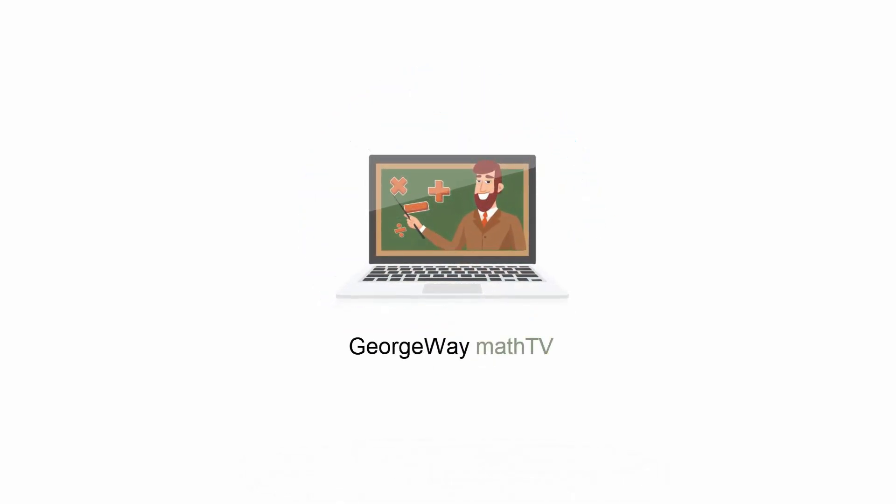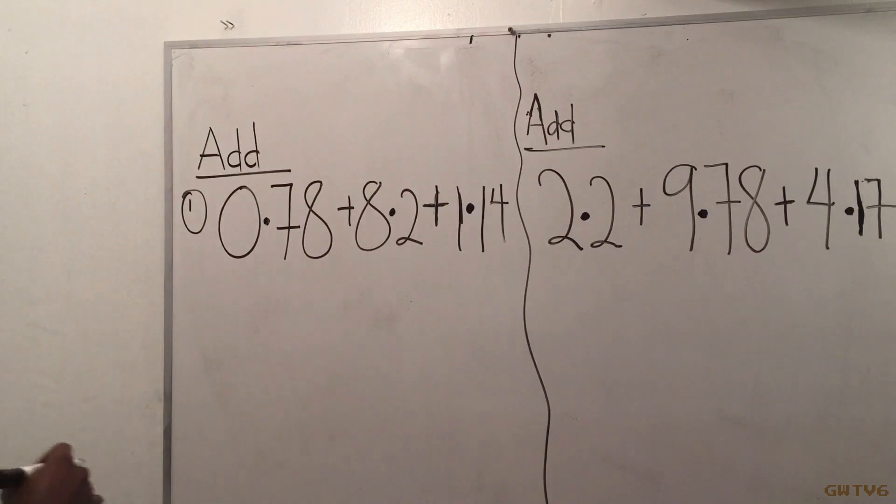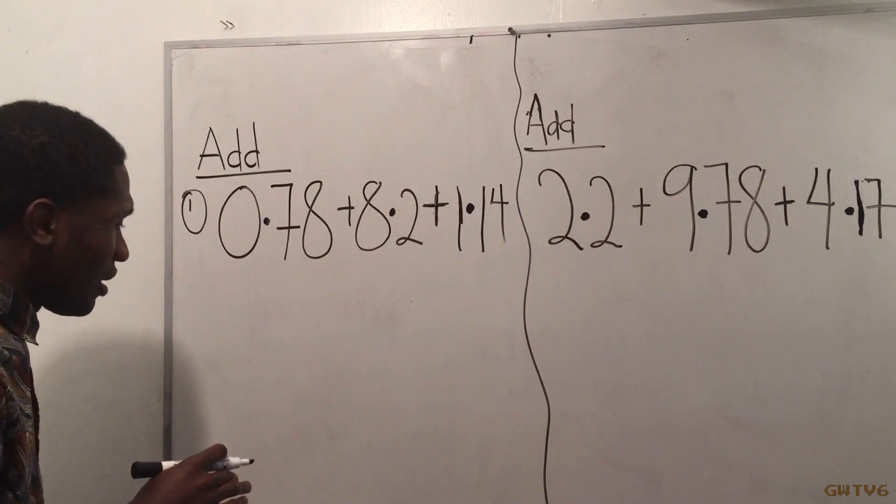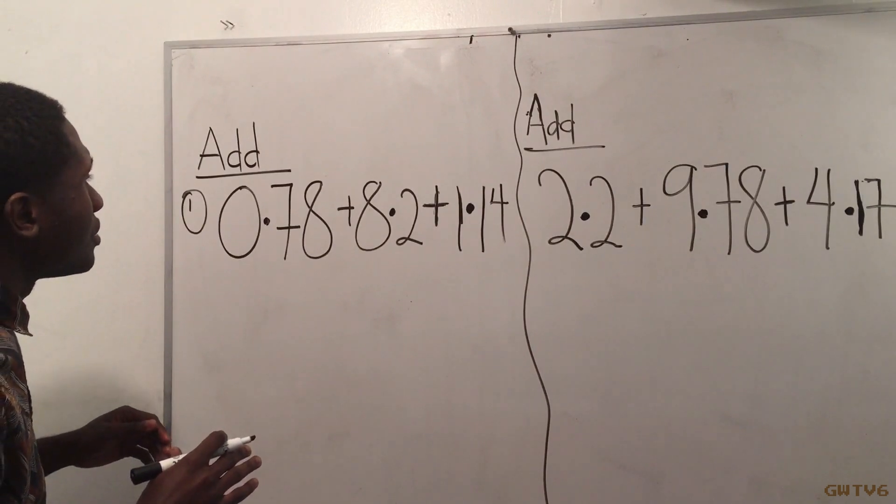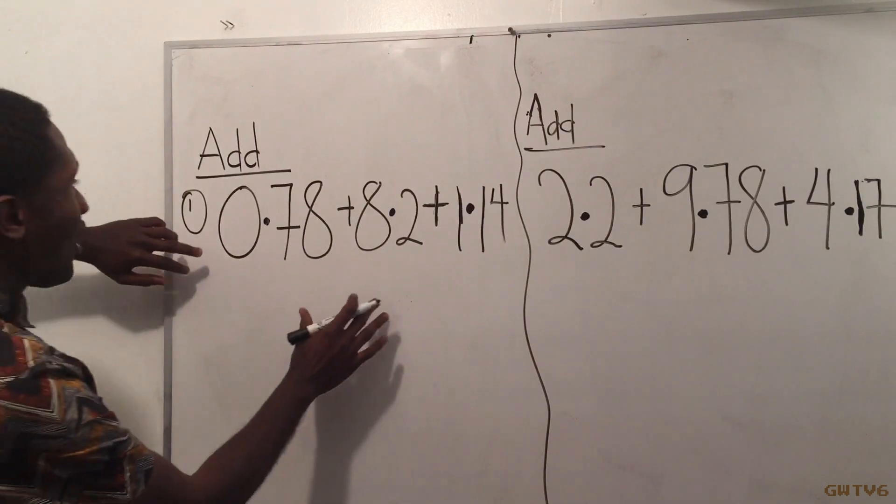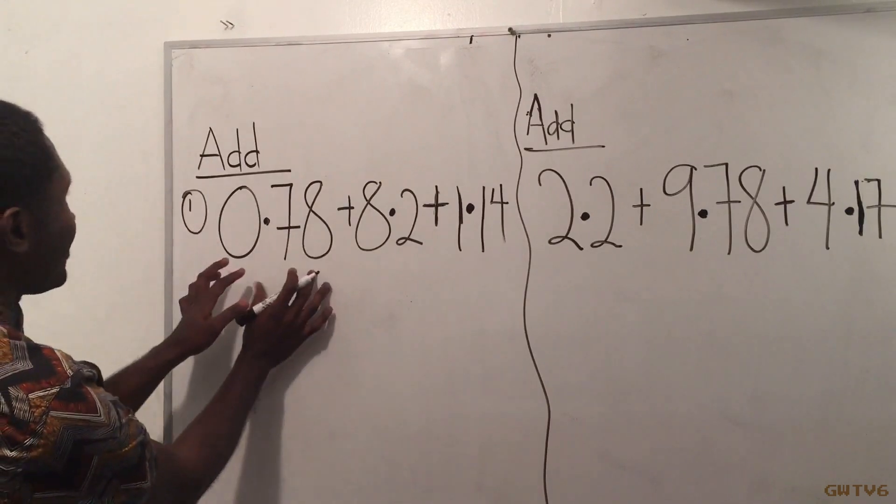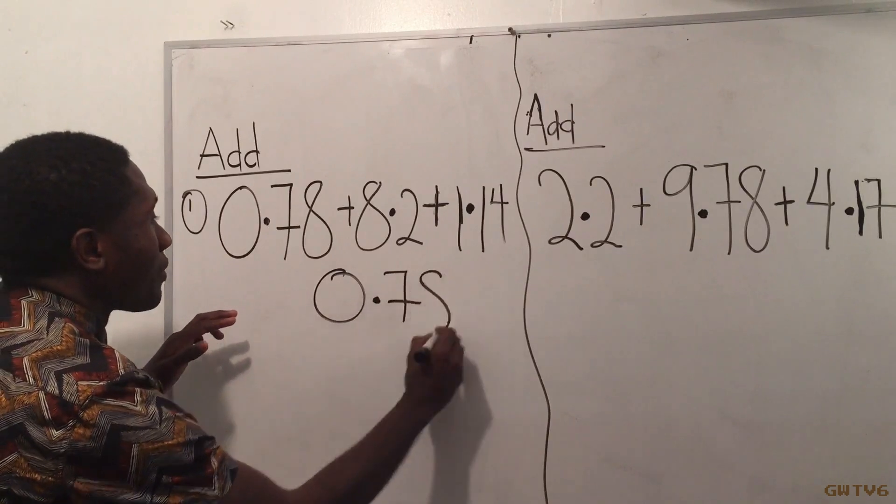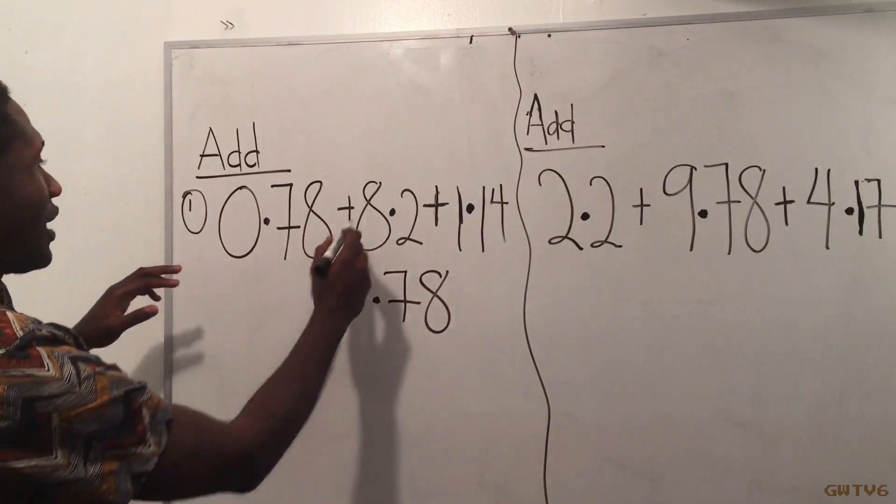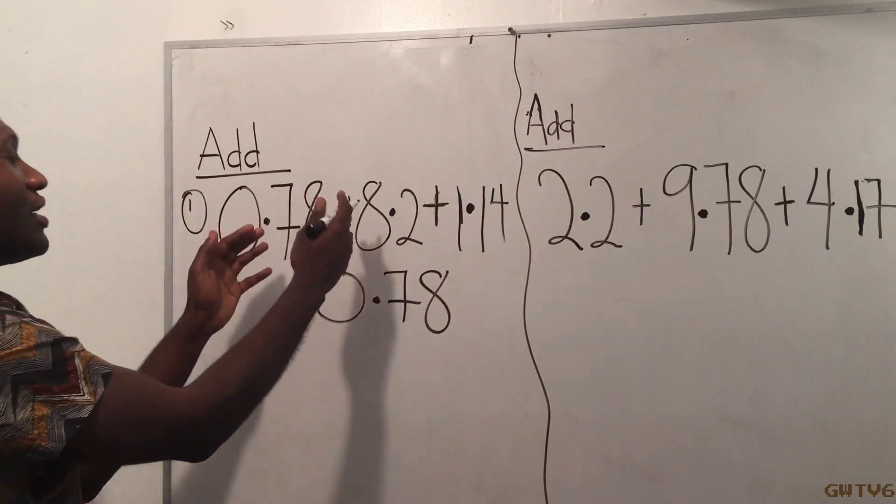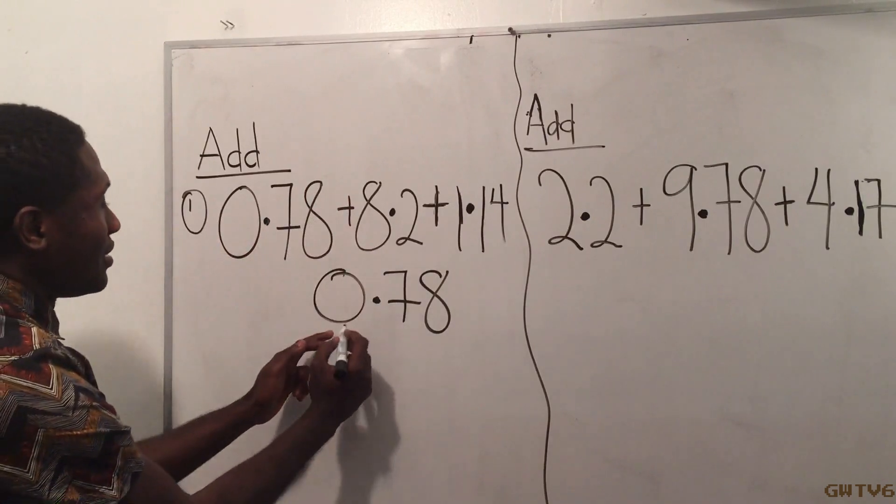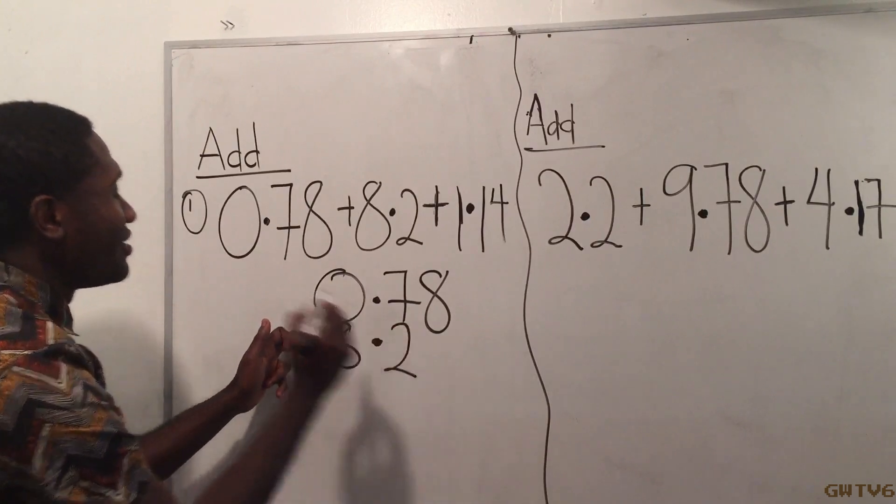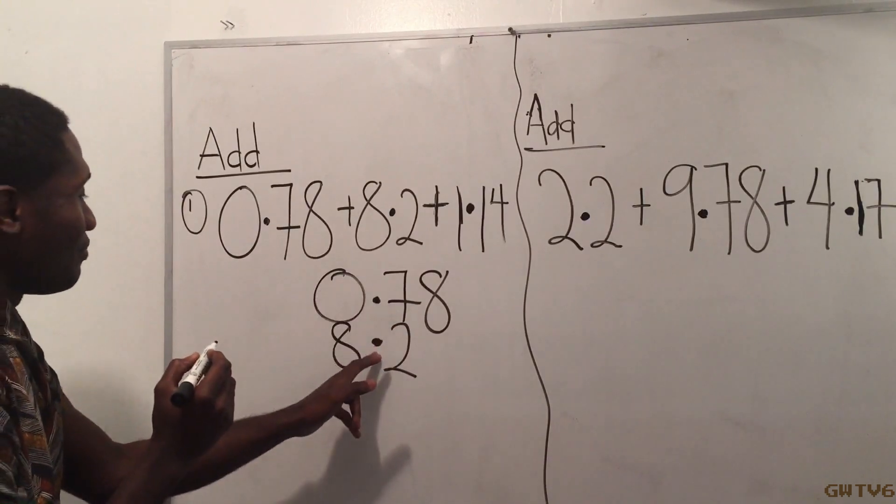Welcome to Georgia Math TV. I have to do this right, so the first one is 0.78. I'll put 0.78 and then this one is 8.2. I have to make sure the decimals are in line, so 8.2, I'm gonna put it right here. The decimals are in line.